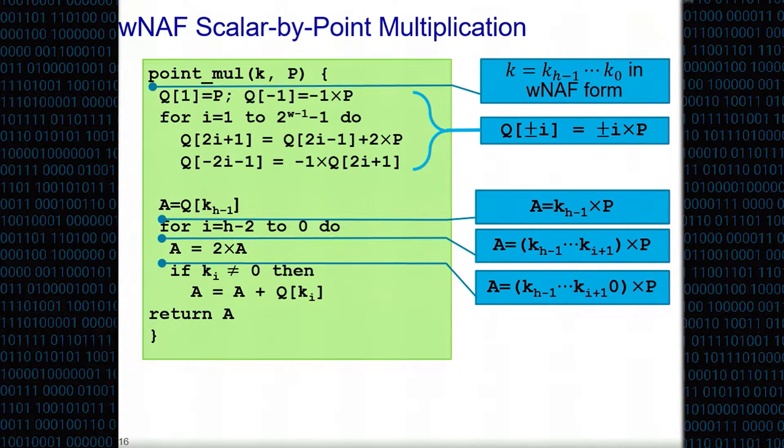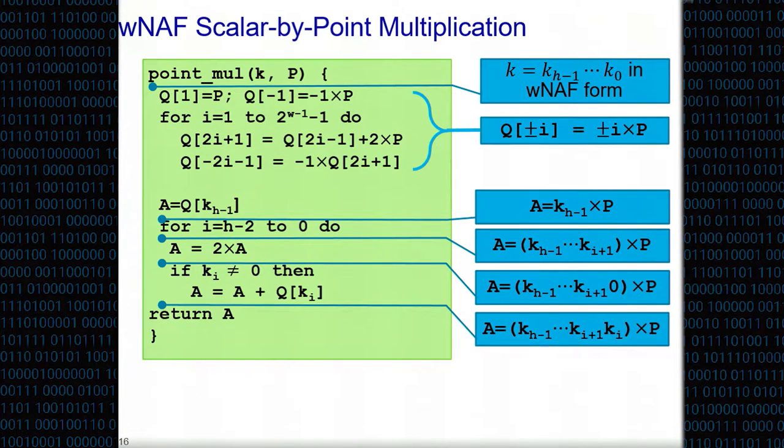What it does next is it takes a and doubles it. Doubling a point of this form is the same as appending 0 at the end, so we get that a is k_(h-1) down to k_(i+1) with 0 at the end cross p. Now we have two options: if k_i happens to be 0, we're done, you already have what we want. If not, then we go to q[k_i], we fetch from the k_i location. What did we fetch? We fetched k_i cross p. Then we add it to the accumulator, and this results in a being k_(h-1) down to k_i cross p. In particular, in the last iteration being k cross p. That's w-NAF scalar by point multiplication.